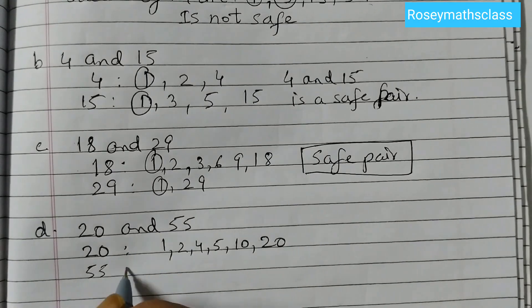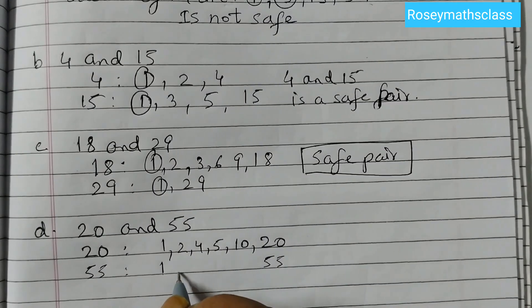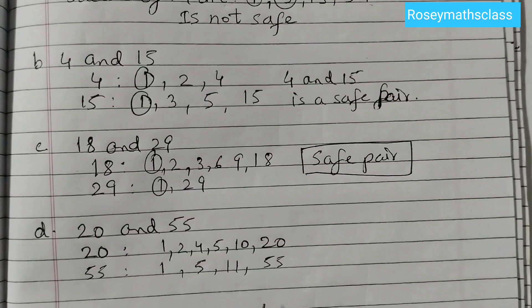And for 55, the factors are 1 times 55, then 5 times 11. So these are the factors of 55.